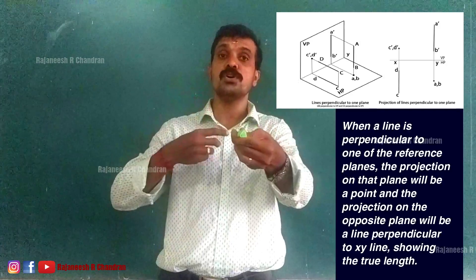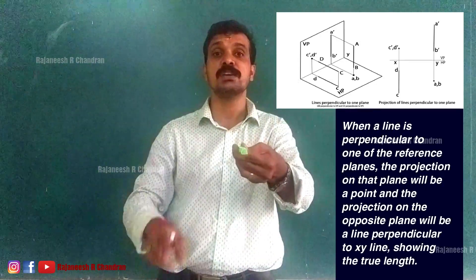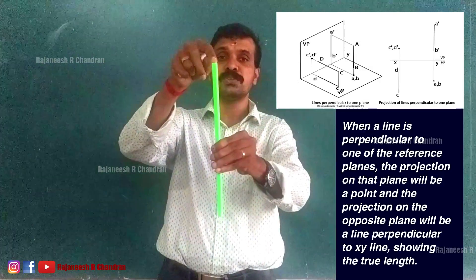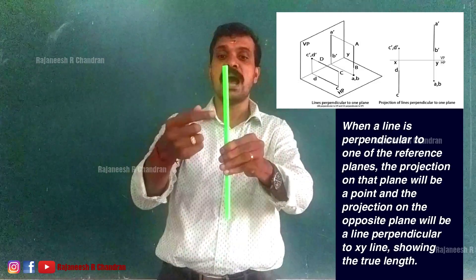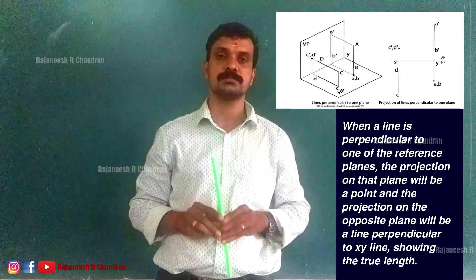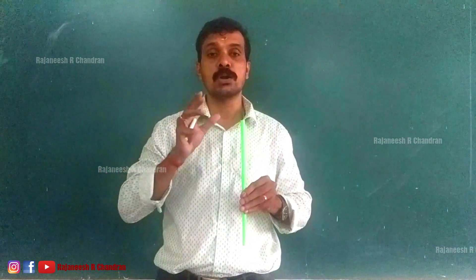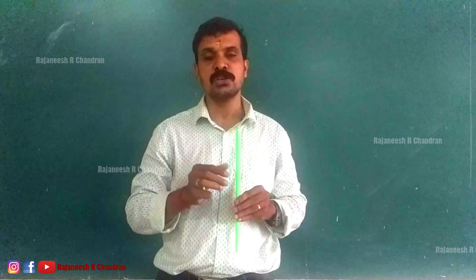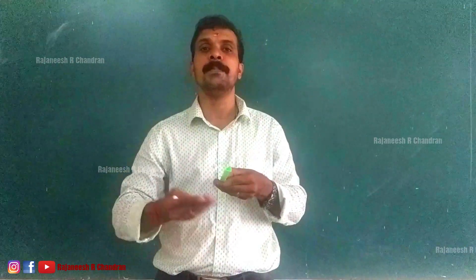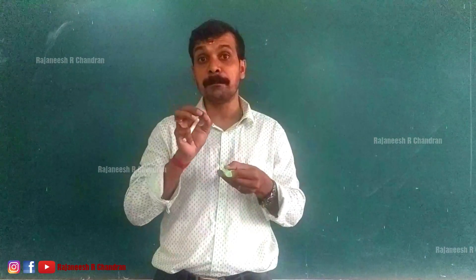We can expand this rule: when a line is perpendicular to VP, the front view will be a point and the top view will be a line perpendicular to XY showing the true length. When a line is perpendicular to HP, the top view will be a point and the front view will be a line perpendicular to XY showing the true length. When a line is perpendicular to one reference plane it is automatically parallel to the other.